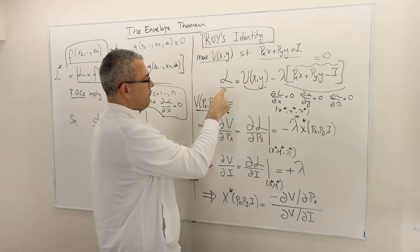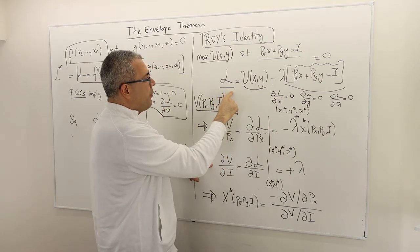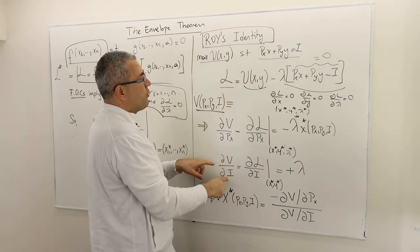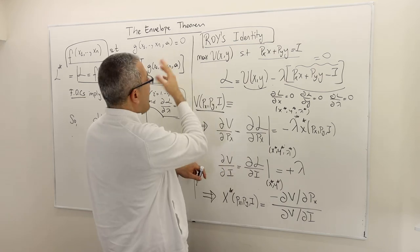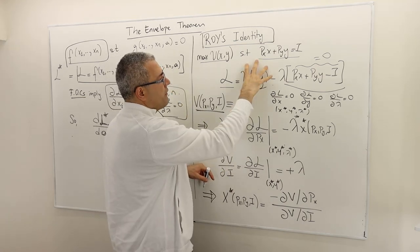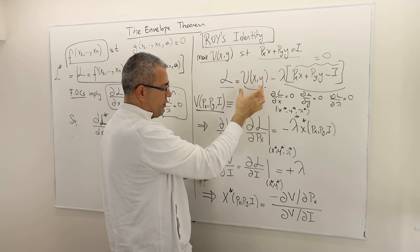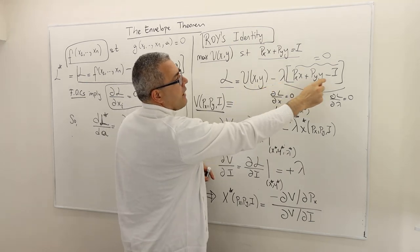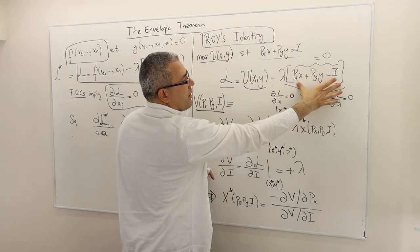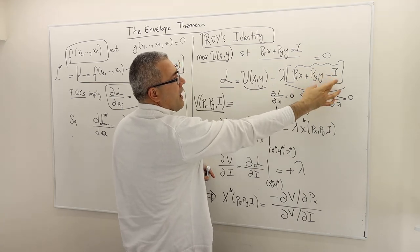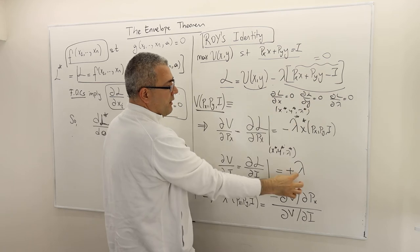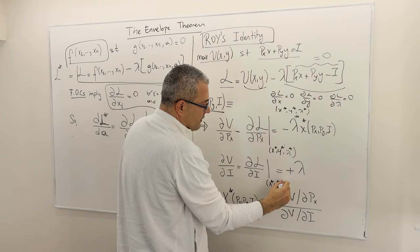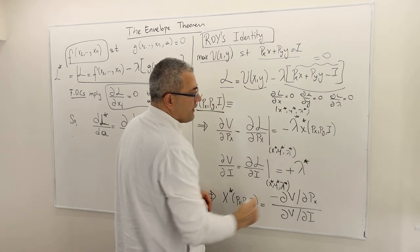Second, take the partial derivative of the indirect utility function with respect to income. By the envelope theorem, this equals the partial derivative of the Lagrangian with respect to I. The partial derivative of utility with respect to income is zero, and the partial derivative of minus lambda times (px·x + py·y − I) with respect to I is minus lambda times minus one, giving plus lambda. Evaluated at the optimum, this is plus lambda*.